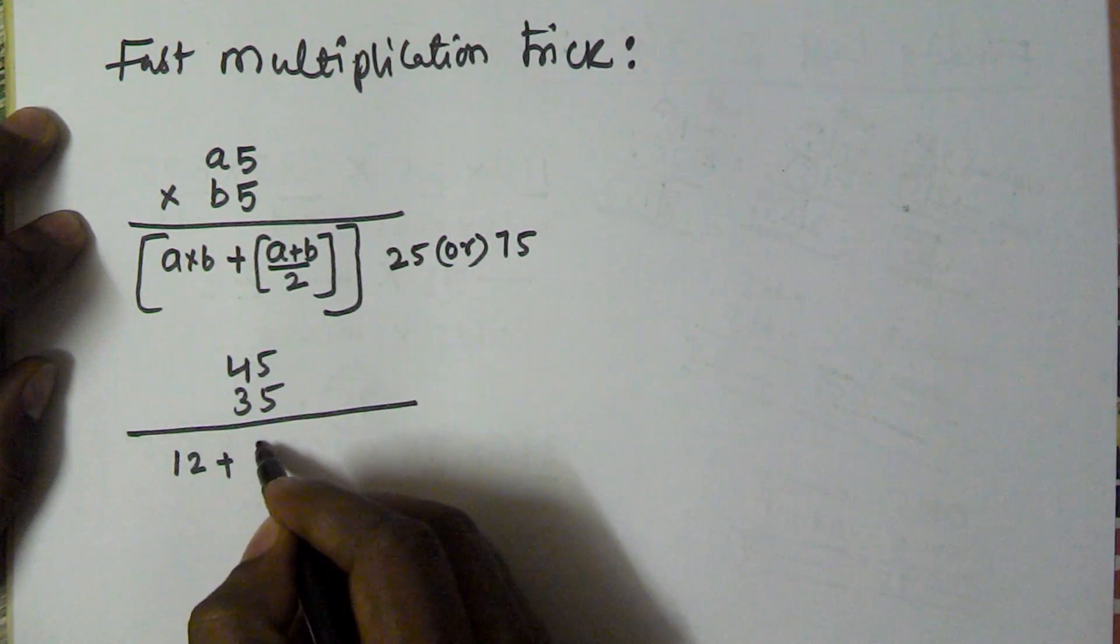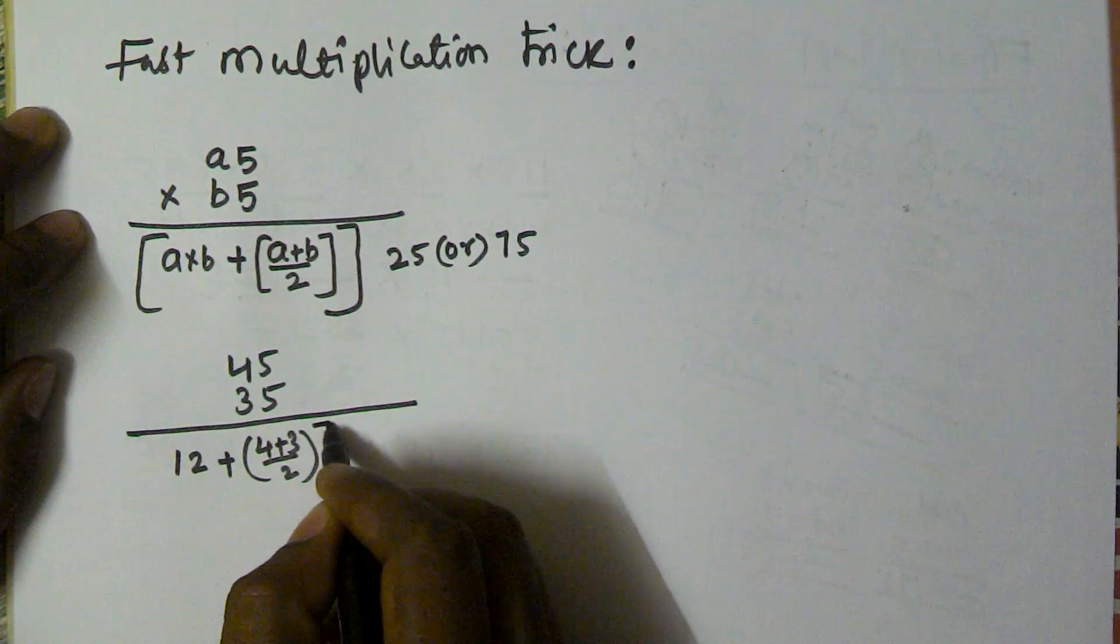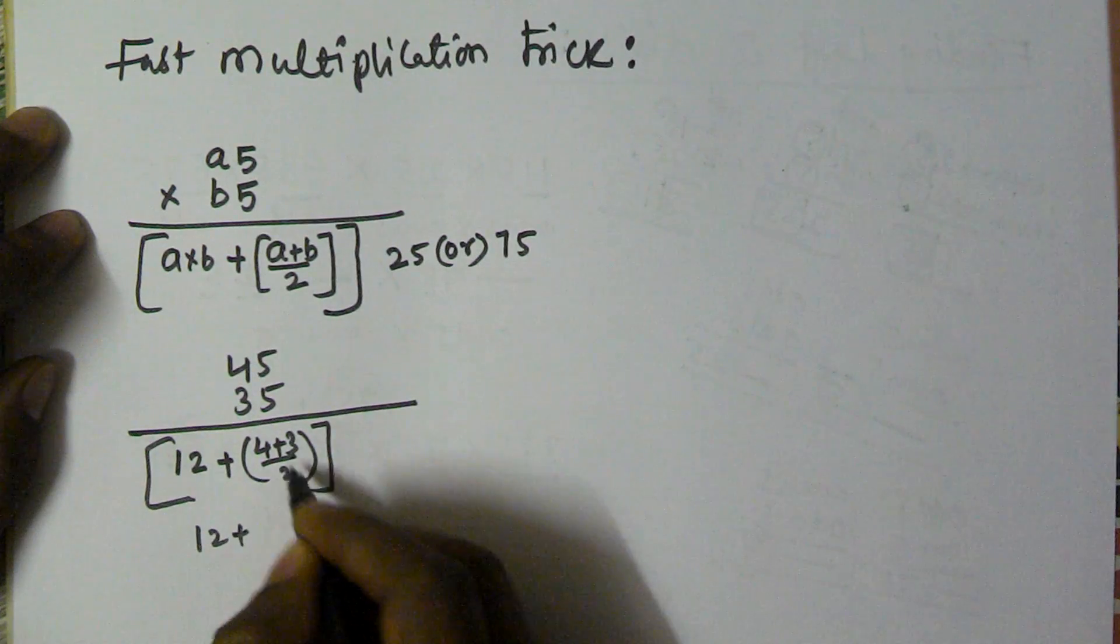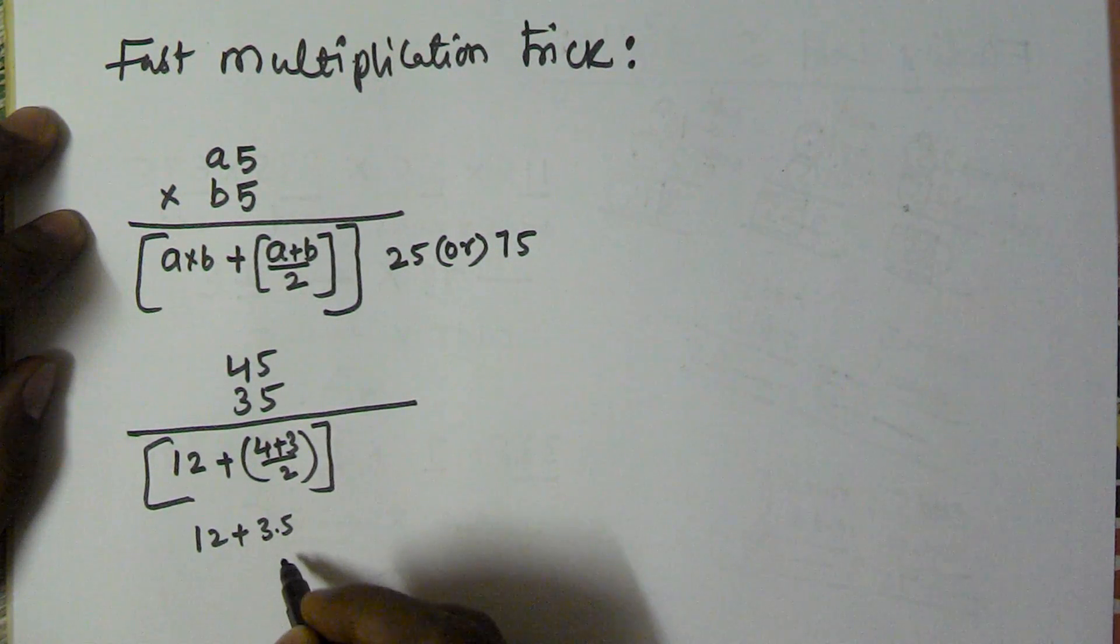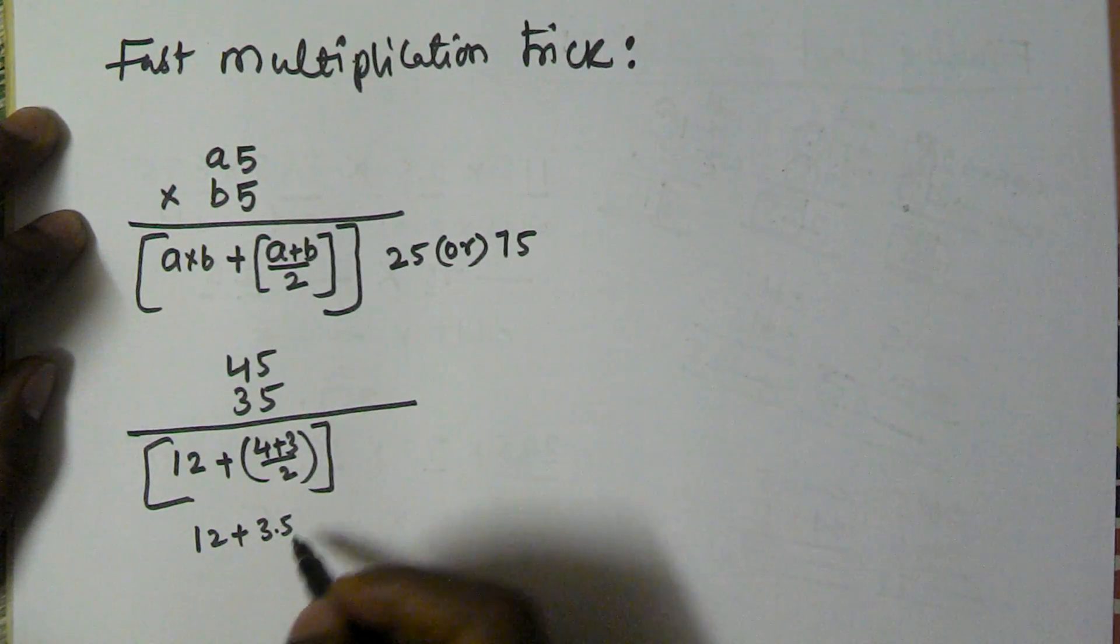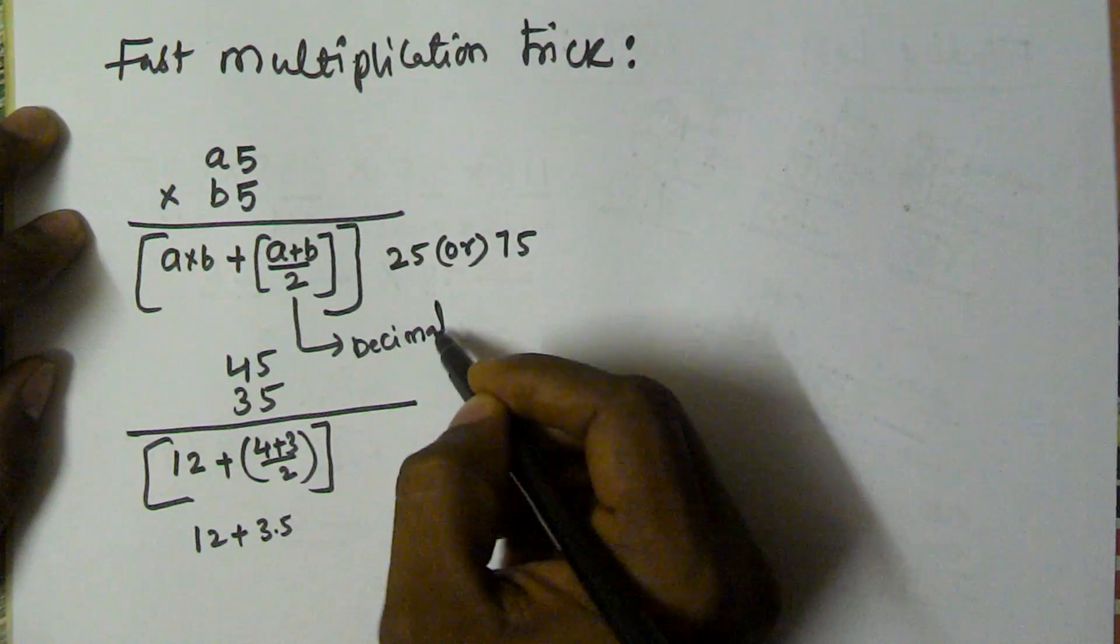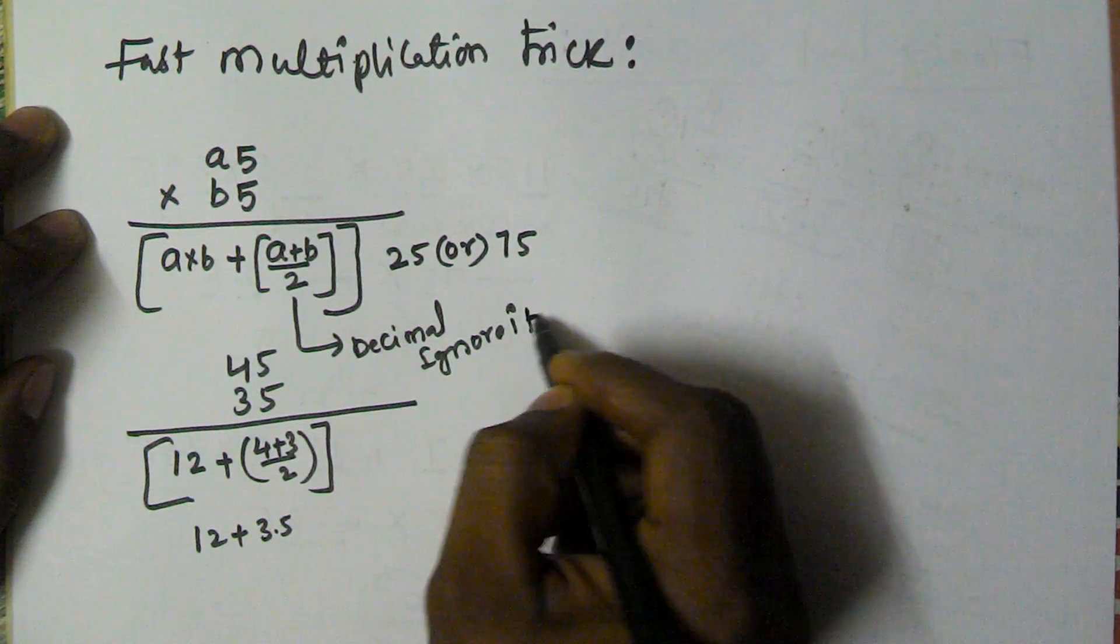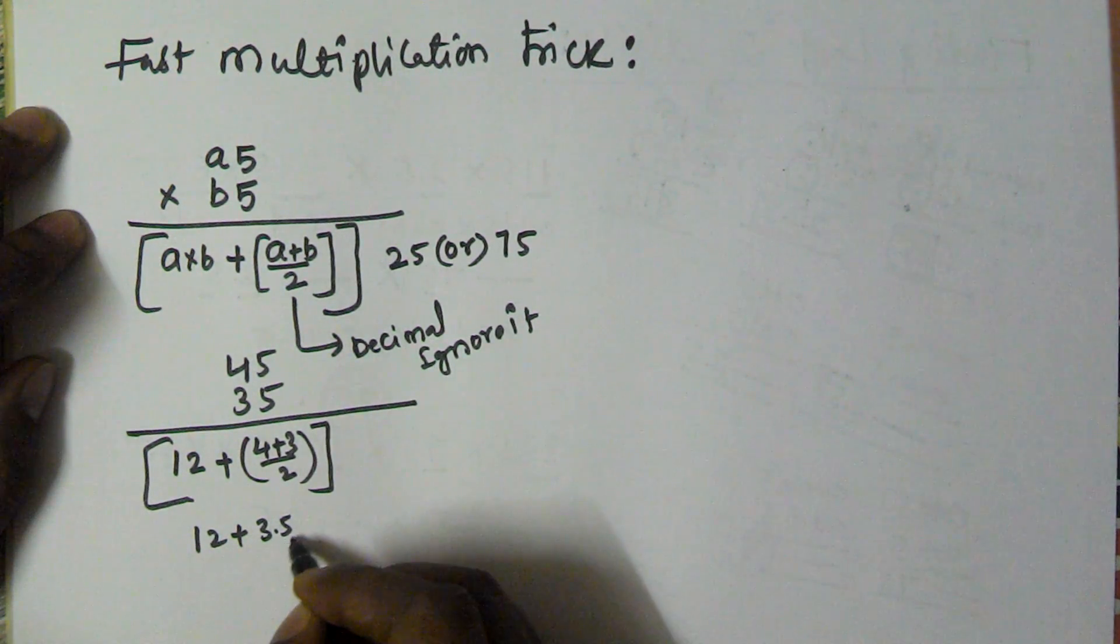So that is 12 plus 4 plus 3 is 7, so 3.5. If you are getting any decimal point here, simply ignore it. So here we are getting 3.5, so we consider this one as 3 only.